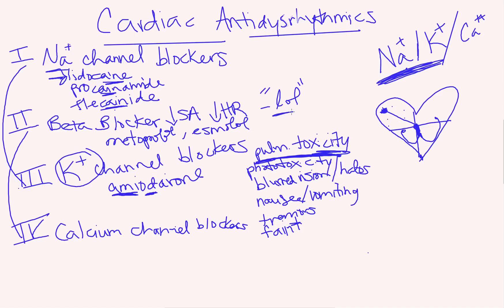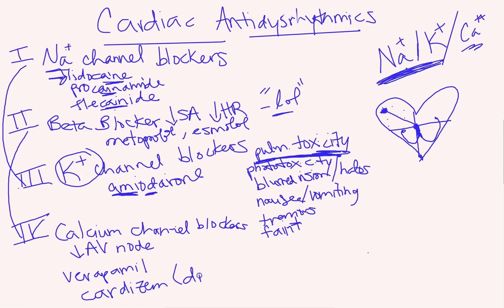Class four anti-dysrhythmics are calcium channel blockers. They decrease AV node conduction and also decrease contractility, since calcium is involved in cardiac and general muscle contraction. Key examples are verapamil and cardizem (diltiazem). I also did a video on calcium channel blockers in my vasoactive series. My trick for remembering verapamil: 'Vera and Pam' are old ladies who always tell you to drink your milk — calcium. And Cardizem starts with 'CA,' which stands for calcium, making it easy to identify as a calcium channel blocker.